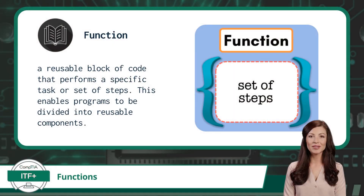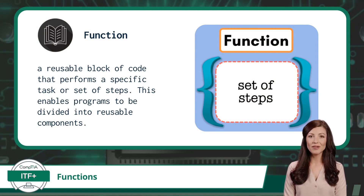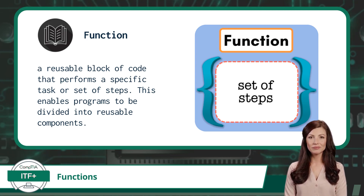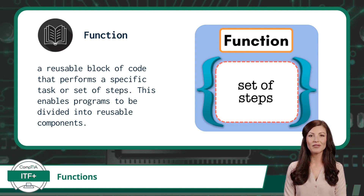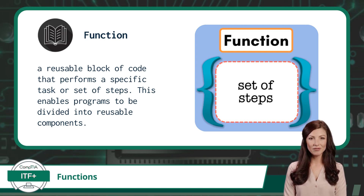Functions. Let's start with the basics. What exactly is a programming function? In simple terms, a function is a reusable block of code that performs a specific task or set of steps. This enables programs to be divided into reusable components. Think of it as a set of instructions that we can call upon whenever we need to perform that task, without having to write the same code over and over again.